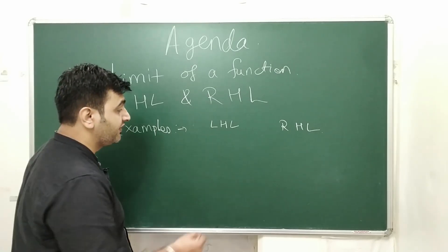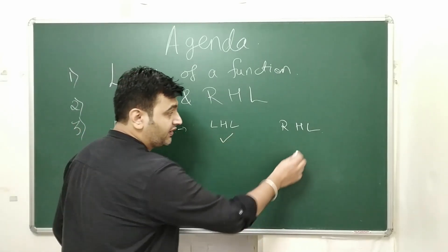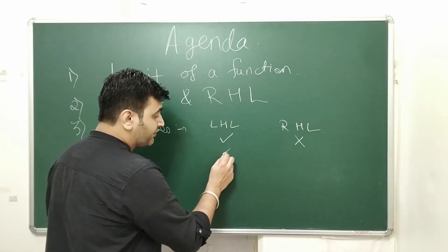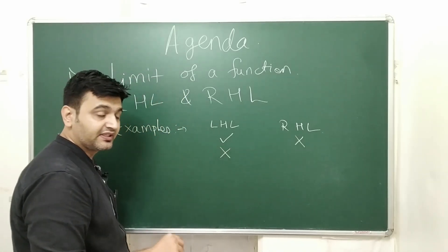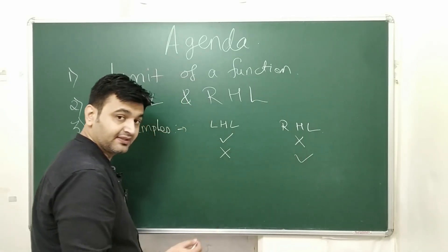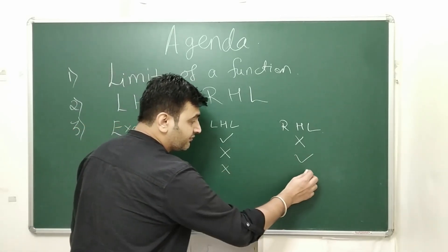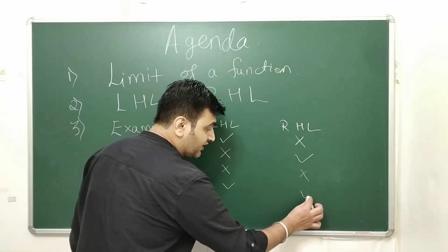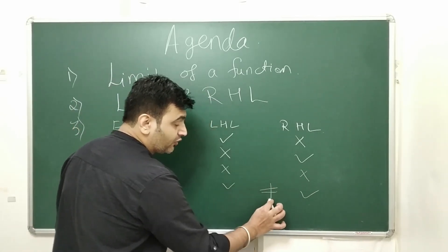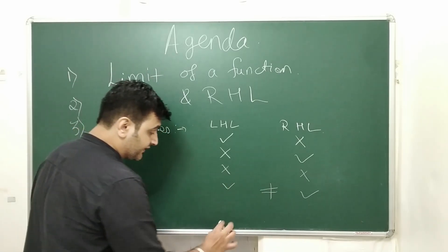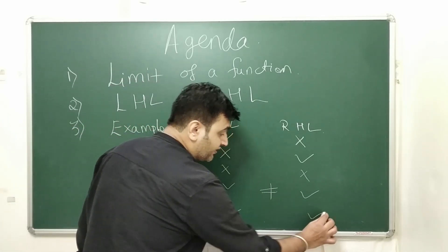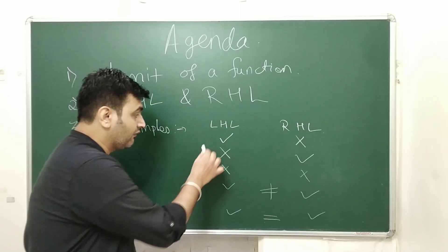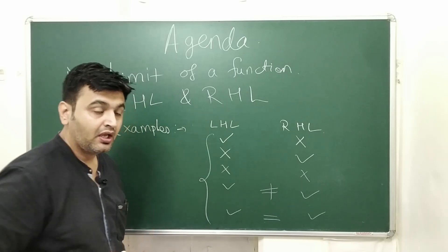The examples I'm going to cover: first, where the left hand limit exists but the right hand limit does not exist; then where the left hand limit does not exist but the right hand limit exists; then the scenario where both limits do not exist; then where both limits exist but they need not be equal; and at the end,